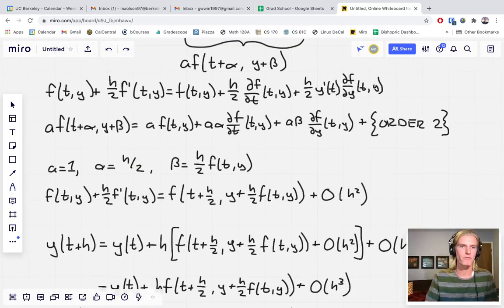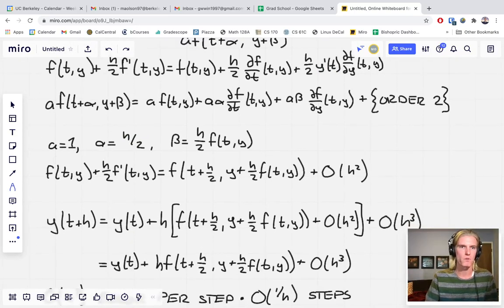Now we're left with this line right here. We have our bracketed term is equal to a is one. Alpha is h over two. Beta is h over two times f of t,y. And an order two error term.